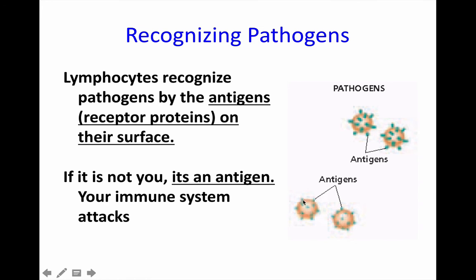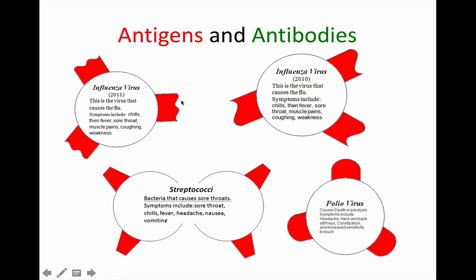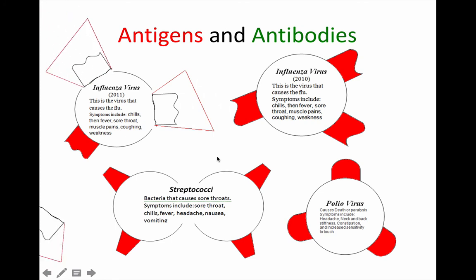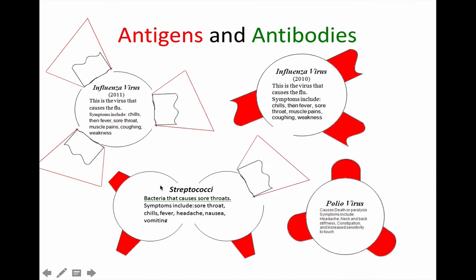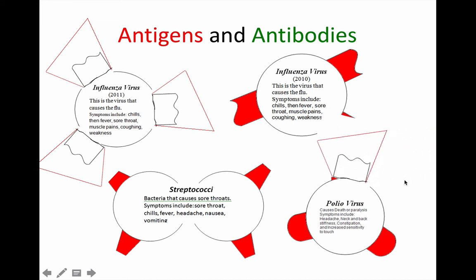Antigen is not you — don't confuse it with antibodies. Antigens are the bad guys; your body makes antibodies. Antibodies are very specific to each of their antigens. You make antibodies that will bind to the influenza virus, and they work. But if you try to use those antibodies on a different flu virus from a different year — because the flu virus mutates a lot and its protein receptors change — it doesn't work. If you try to use it against streptococci bacteria or the polio virus, it's not going to work. Antigens and antibodies are very specific to each other; their shapes have to match.